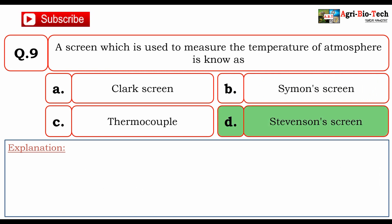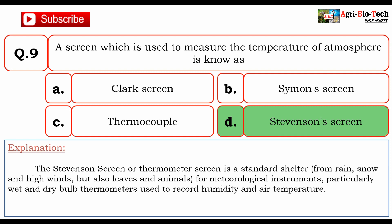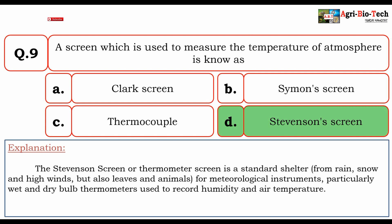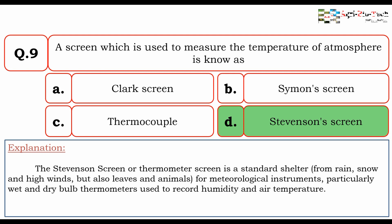The Stevenson's screen, or thermometer screen, is a standard shelter from rain, snow, high winds, leaves, and animals, for meteorological instruments — particularly wet and dry bulb thermometers used to record humidity and air temperature. So the correct answer is D. Stevenson's screen.